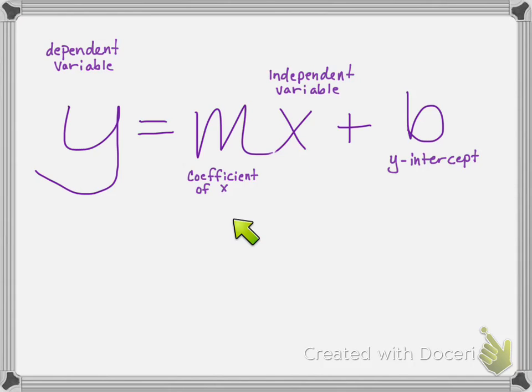You can see right next to that we've got the coefficient of x. This is the m. It's basically the number that we multiply the x by.